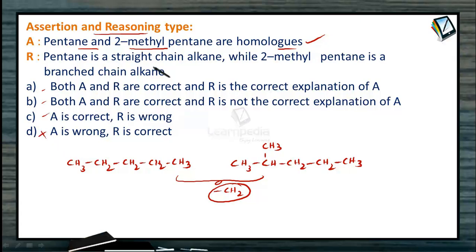Let us move to the next statement, the reason. Pentane is a straight chain alkane while 2-methylpentane is a branched chain alkane.